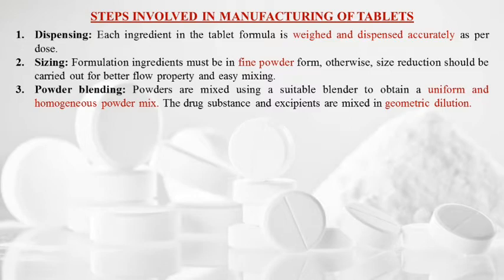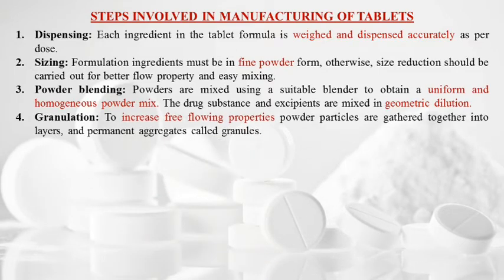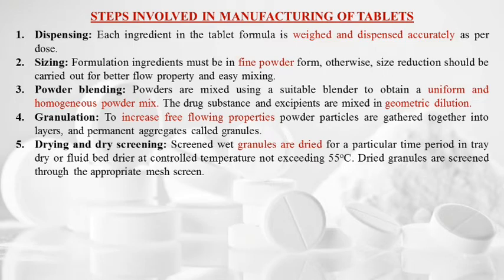The drug substance and excipients are mixed in geometric dilution. The fourth step is granulation — to increase the free-flowing properties, powder particles are gathered together into layers and permanent aggregates called granules.